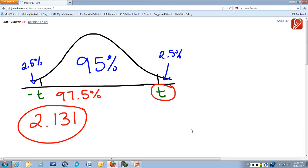So that's our answer. This critical t value right here, the critical value for a confidence level of 95% with a sample size of 16, is 2.131.